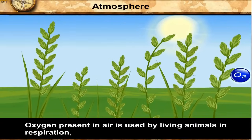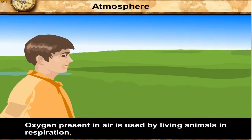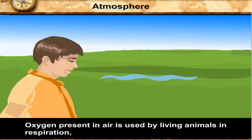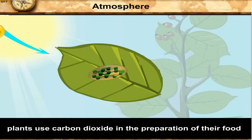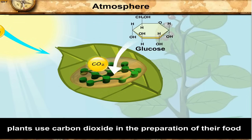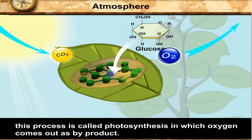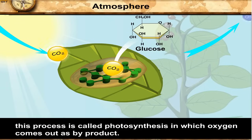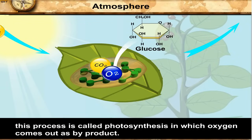Oxygen present in air is used by living animals in respiration. Plants use carbon dioxide in the preparation of their food. This process is called photosynthesis, in which oxygen comes out as a by-product.